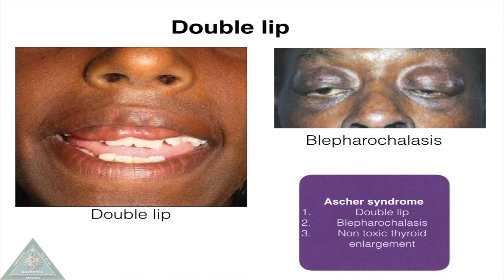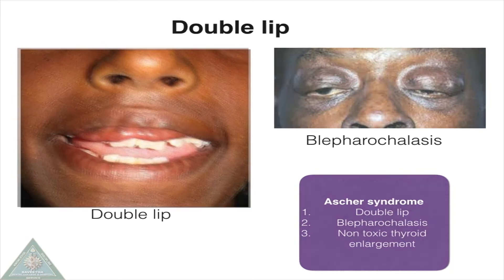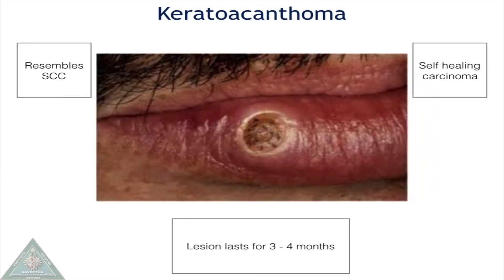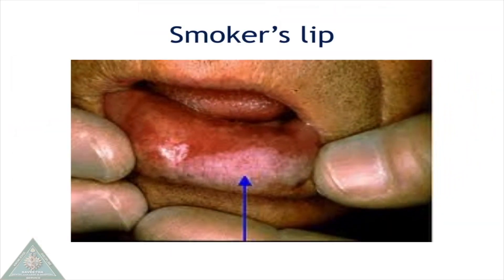The associated syndrome for double lip is Asher syndrome, characterized by double lip, blepharochalasis, and non-toxic thyroid enlargement. Keratoacanthoma is otherwise known as self-healing carcinoma since it resembles squamous cell carcinoma, and the lesion lasts for three to four months.